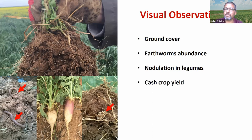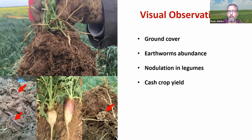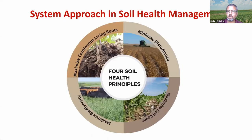We also looked at cash crop yield — whether soil health improvements are really linked to increased production. Our observation is that some changes are happening in the soil, and there is some linkage between soil health improvement and crop production. But cover cropping is not the only practice we should think about.